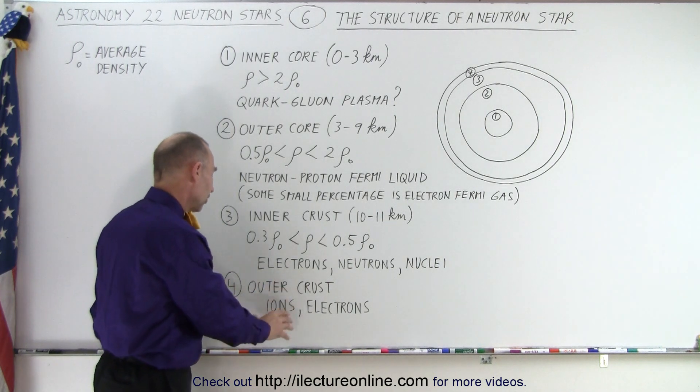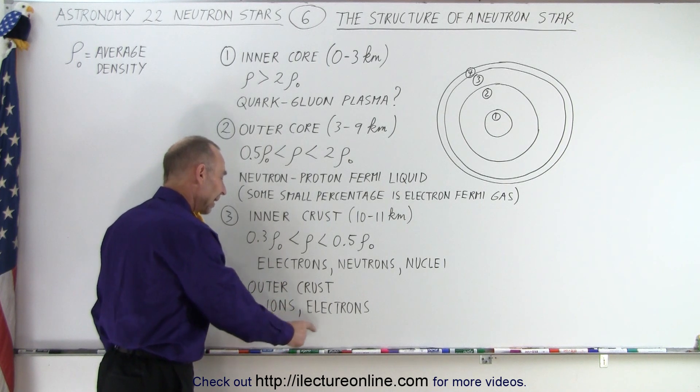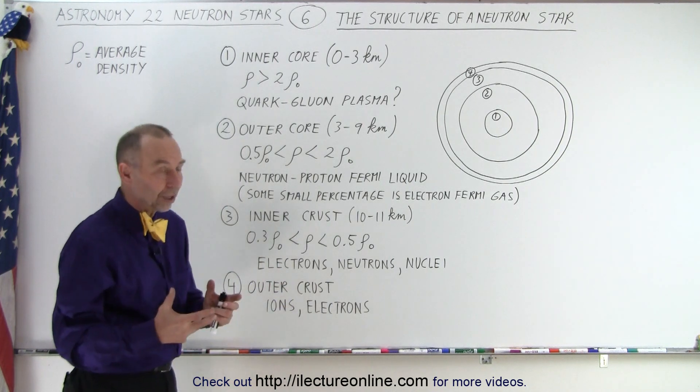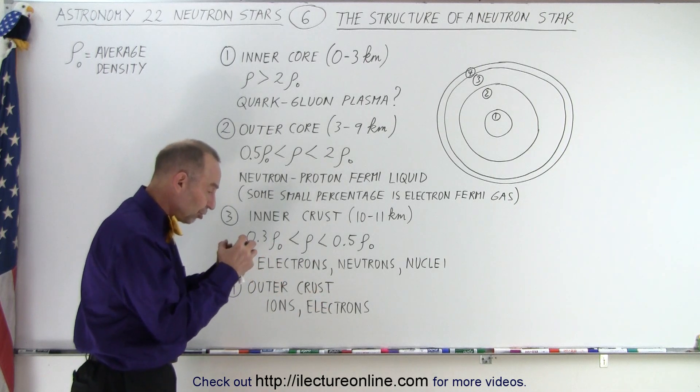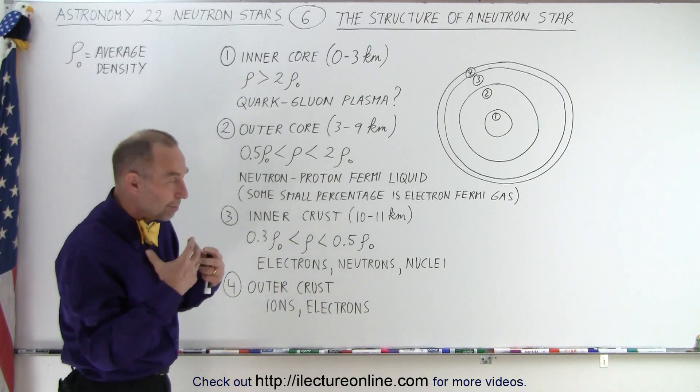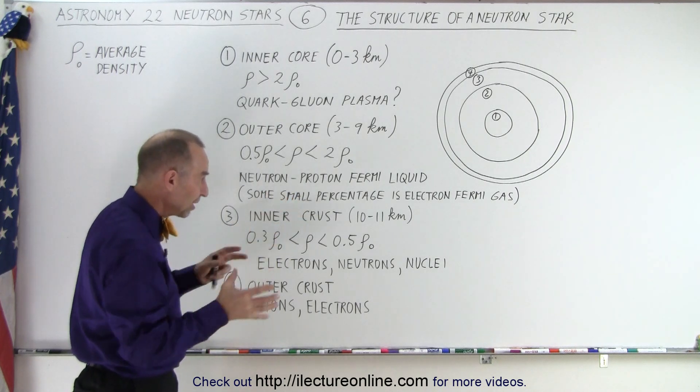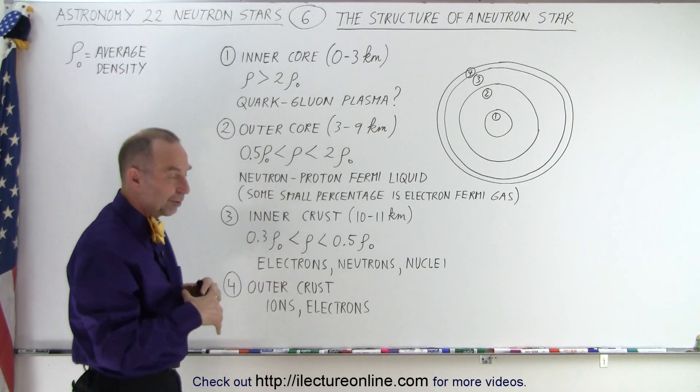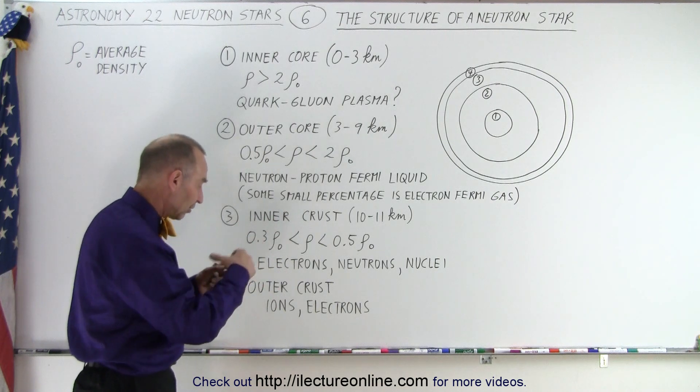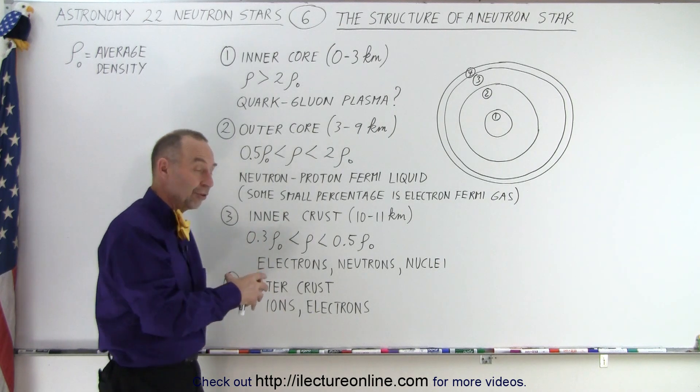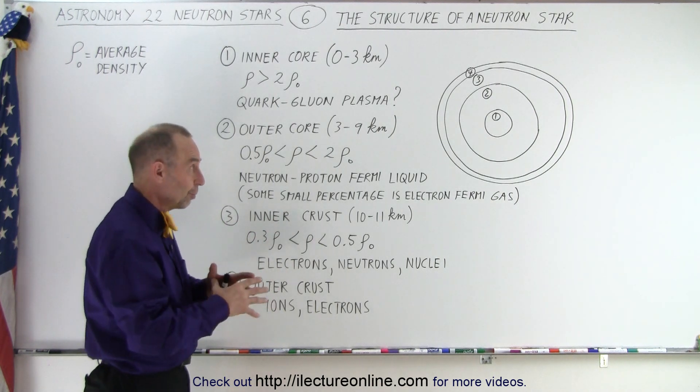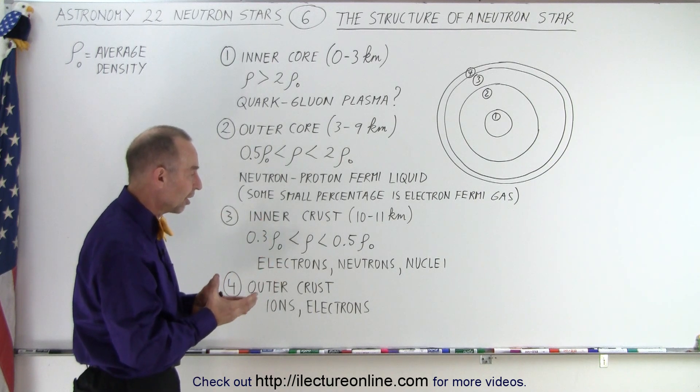And then finally towards the outer crust, we have what we would call ions and electrons. So ions that could be that you have protons and neutrons pushed together into an ionic soup, so to speak, and their electrons would then be free to flow around them because it would be too hot and too dense for the electrons to couple with the ions and turn into atoms. So there's obviously no potential for having any sort of atoms inside a neutron star.